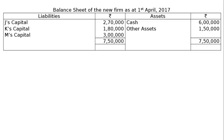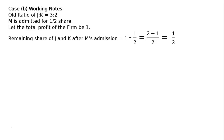Case B: M acquires his share of profit from the firm in equal proportion from the original partners — half and half. Hence sacrificing ratio will be 1 to 1. Only the sacrifice and goodwill treatment will differ. Working notes: Old ratio of J and K is 3 to 2. M is admitted for half share. Let total profit of firm be 1. Remaining share of J and K after M's admission is 1 minus 1/2, equal to 1/2.